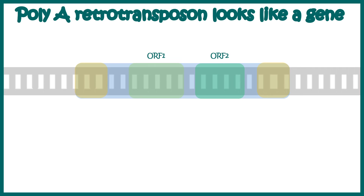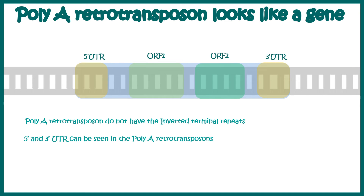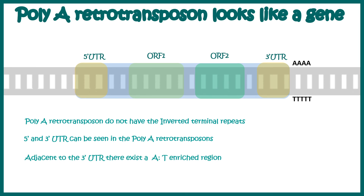Let's talk about poly-A retrotransposons, which exactly look like a gene. These retrotransposons differ from other classes by not having inverted terminal repeats. They have 5' and 3' UTRs just like our mRNAs. They also have two ORFs, ORF1 and ORF2. And lastly, they have an AT-rich region which mimics the poly-A tail of an mRNA. So they pretty much look like a gene.